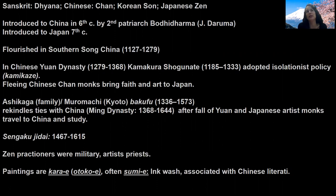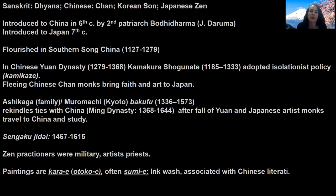In China, over the years, this school — which begins in India as Dhyana — absorbs features from the indigenous Chinese religion and philosophy of Daoism, making it a little different from what it was in its South Asian homeland. It took a while to really take off in China, but it flourished — its heyday both in terms of practice and art — during what's known as the Southern Song period, from 1127 to 1279.